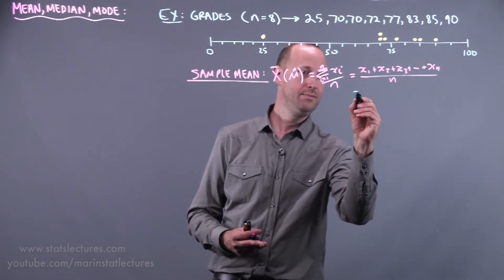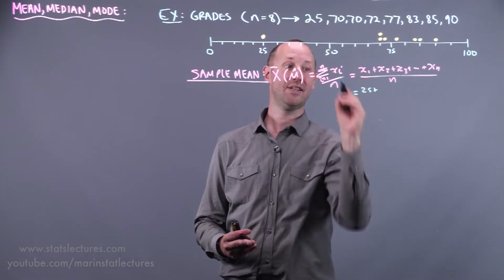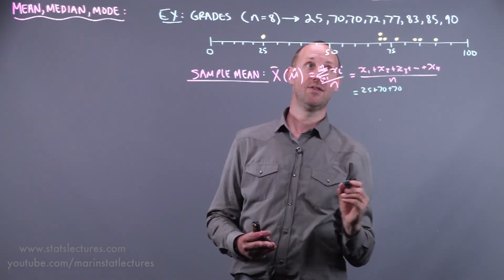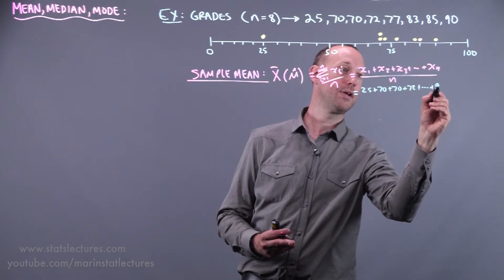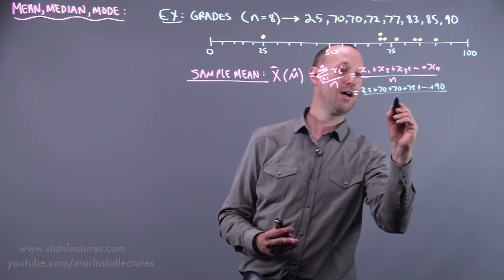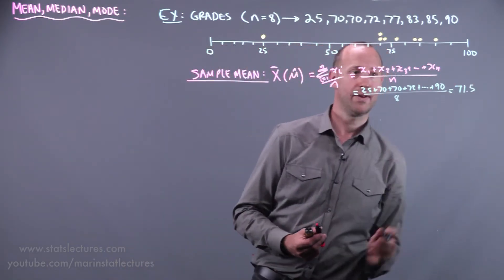In our sample, that's saying x1, the first observation is 25, x2, the second is 70, x3, the third one is 70, fourth one is 72, all the way up to 90, divided by the total number of observations. And that's going to come out to be 71.5.